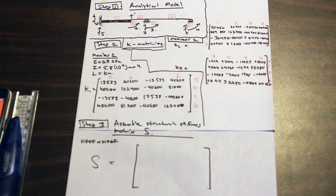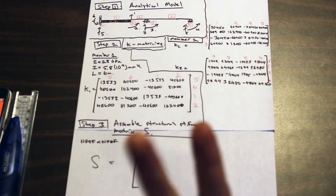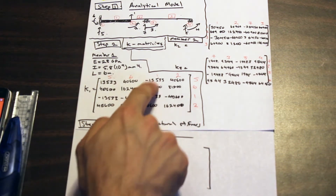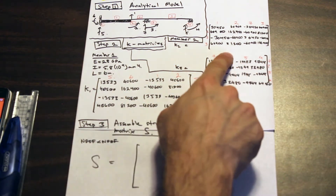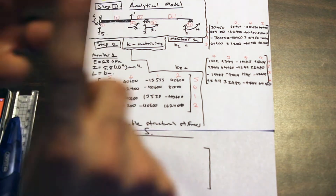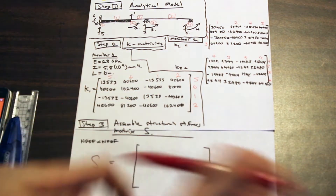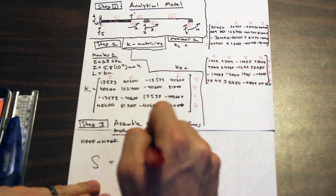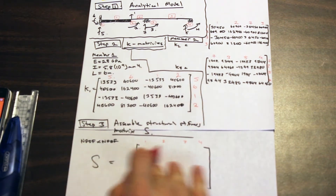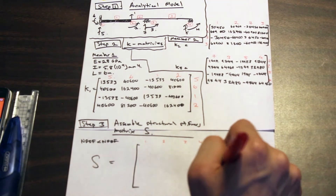Whenever we have an entry in a K matrix that involves code numbers one, two, three, or four — for example positions (1,1), (1,2), (2,1), (3,3) — we're going to put those into the S matrix. Let's start by labeling the code numbers of the structural stiffness matrix. They always go in order from one to the number of degrees of freedom, so here: one, two, three, four.